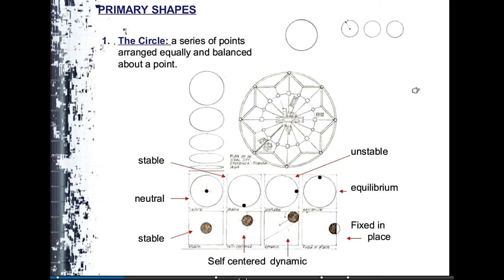Primary shapes are where we derive all forms. These are: circle, square, and triangle. The circle can be dynamic — depending on where you place the weight, it can be neutral (if centered) or dynamic and unstable (if off to the side). Similarly for the square: when off-center, the visual energy inclines to one side and appears dynamic. When the weight is at the center, it is stable.